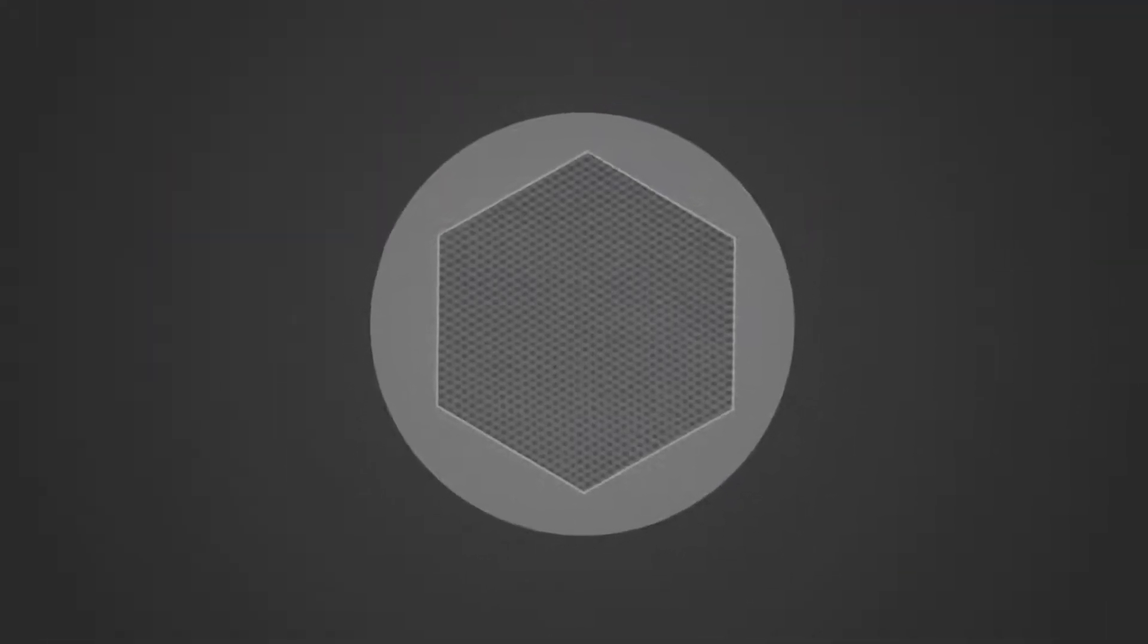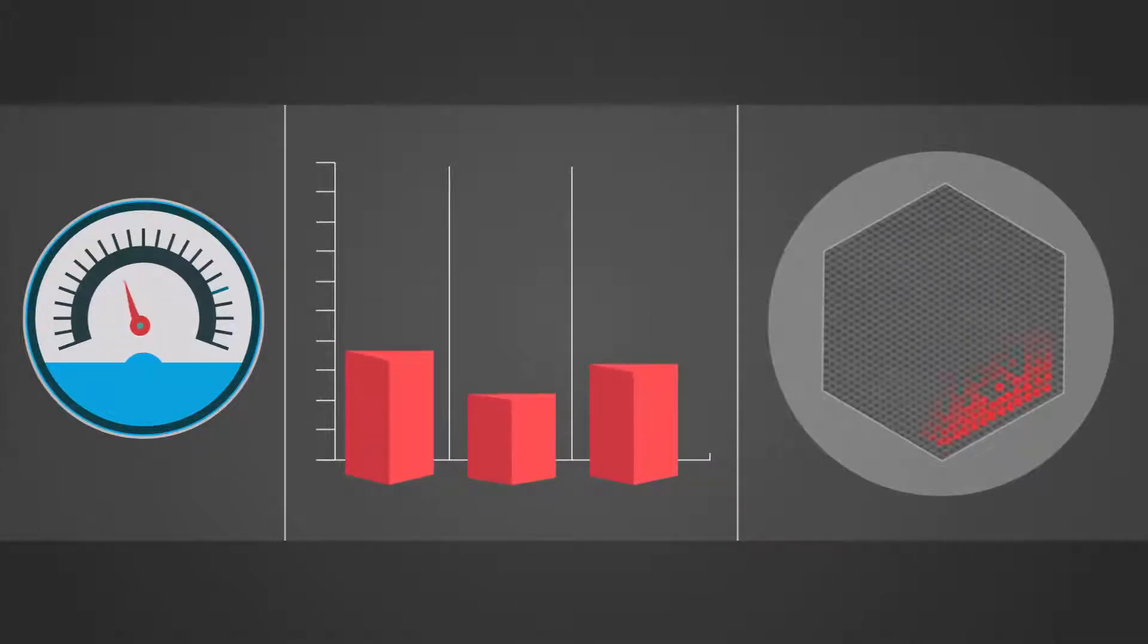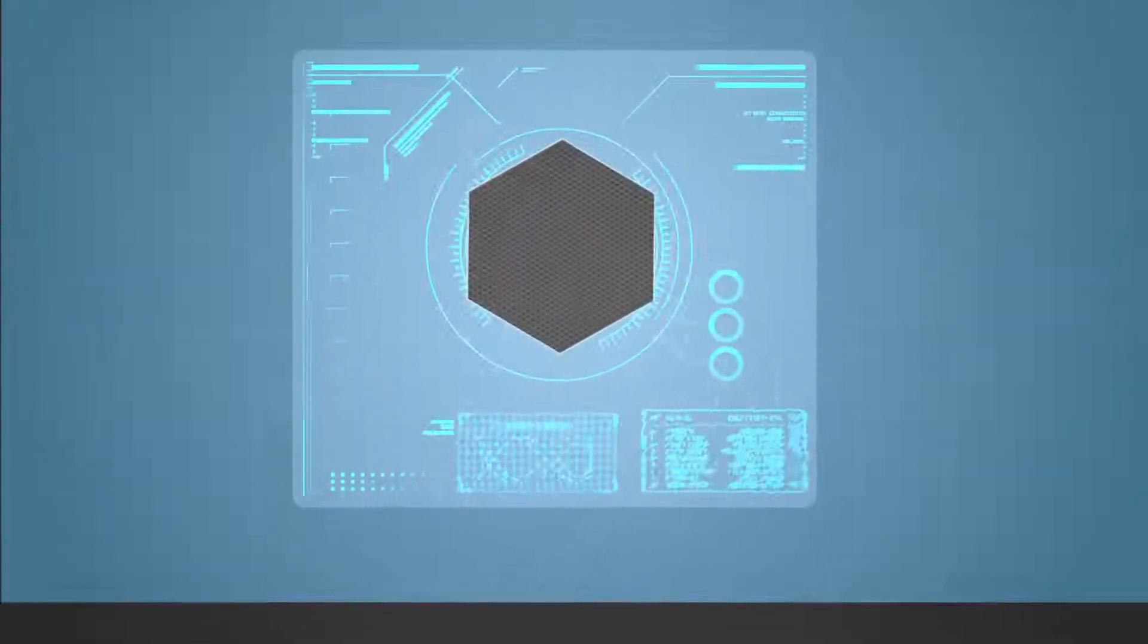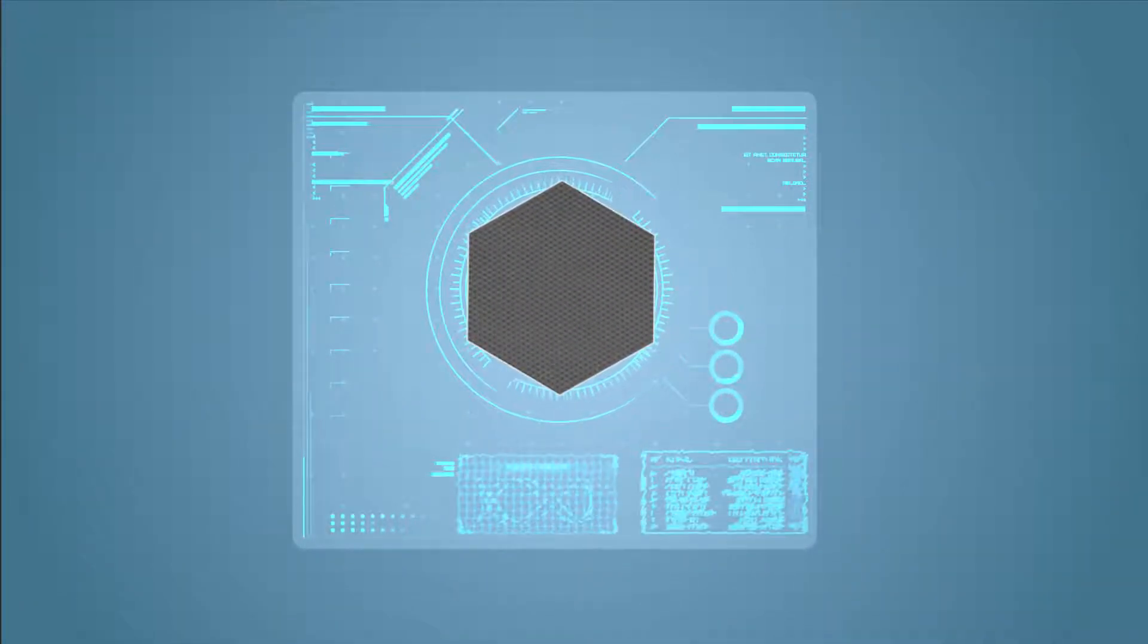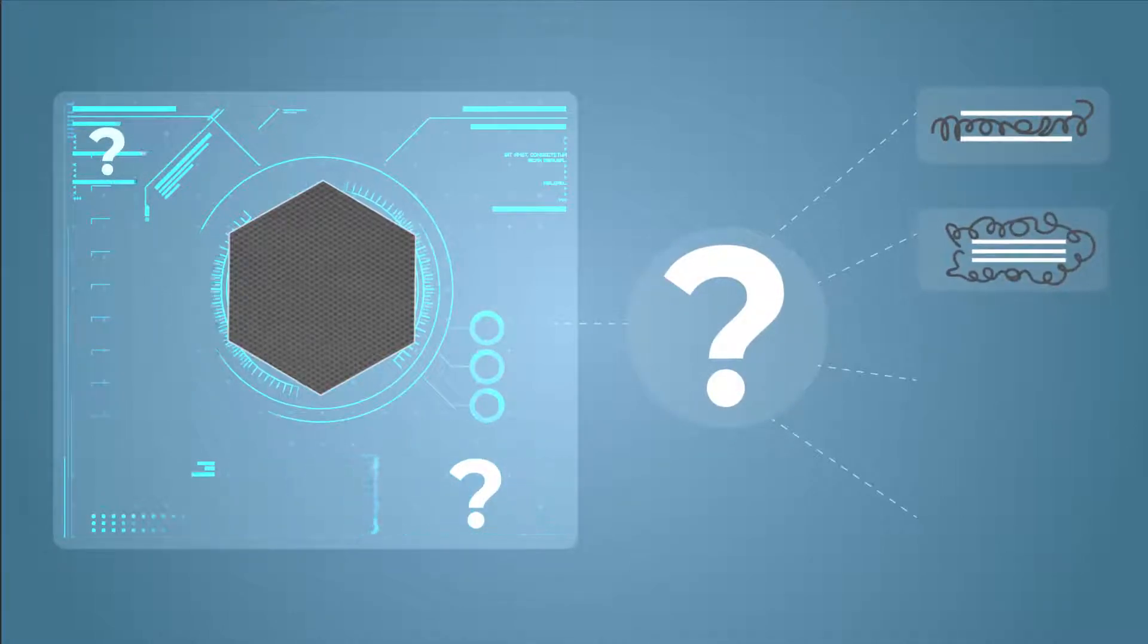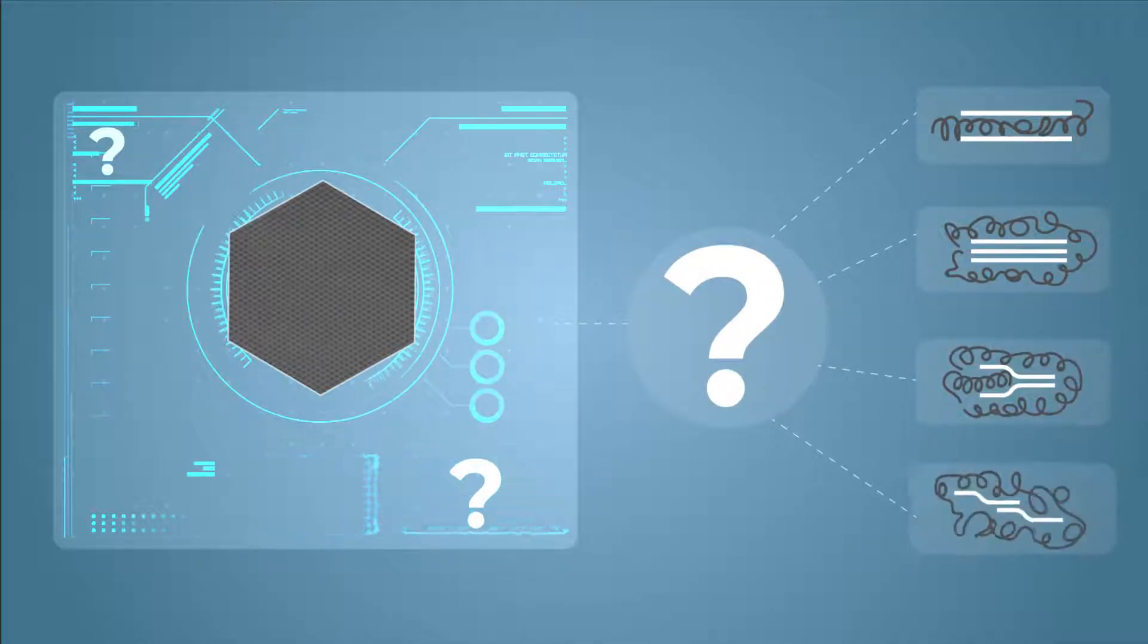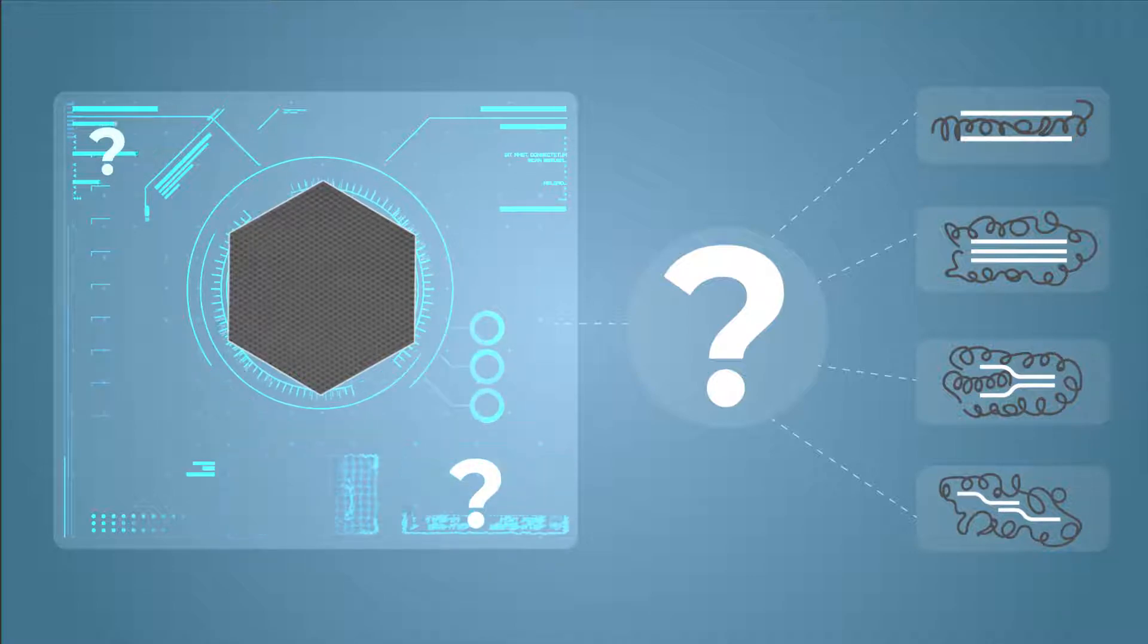However, the structure of graphene oxide can vary significantly depending on its fabrication process and the amount of oxygen it contains. This makes its characterization difficult, which in turn makes it challenging to understand the link between the structure of a graphene oxide flake and their final morphology in composites.